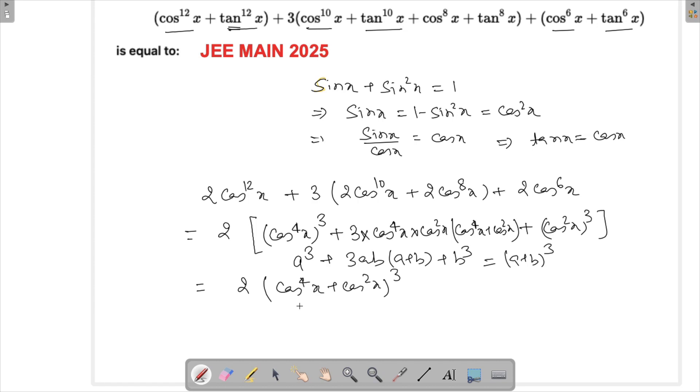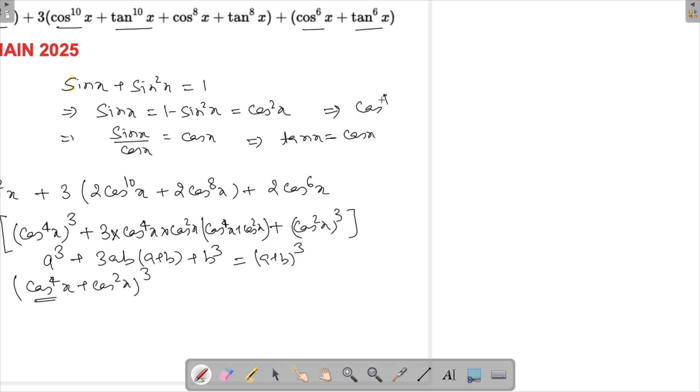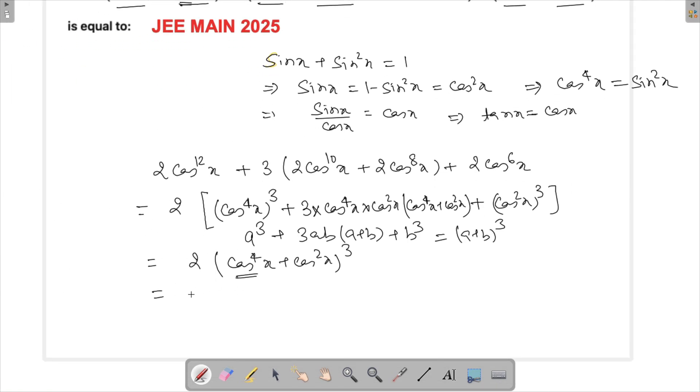Now again let's focus on this cos raised to the power 4x. From here what can we say? Can we say that cos raised to the power 4x is actually equal to sin square x?